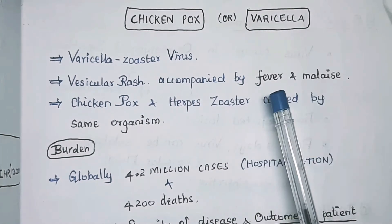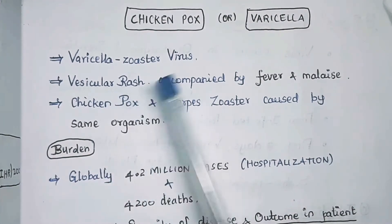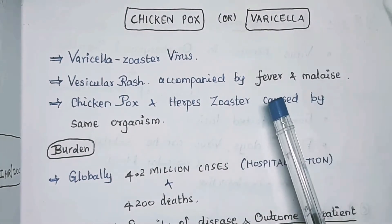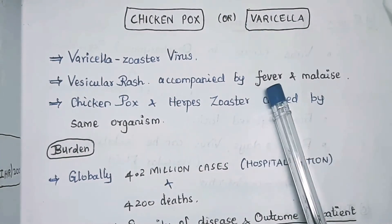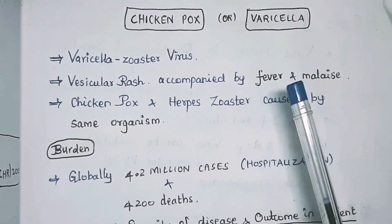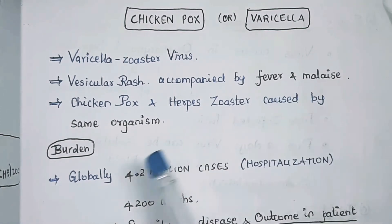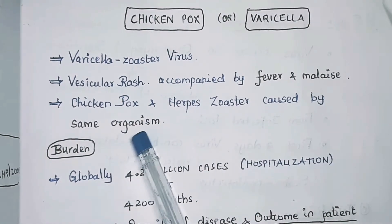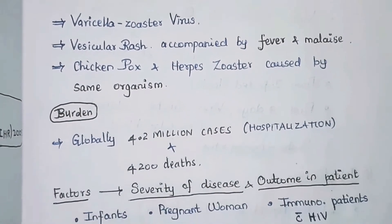The difference between chickenpox and smallpox: in chickenpox the vesicular rash is accompanied by fever and malaise simultaneously, whereas in smallpox the fever arises first, followed by the vesicular rash on the third day. Herpes zoster is caused by the same organism, the varicella zoster virus.